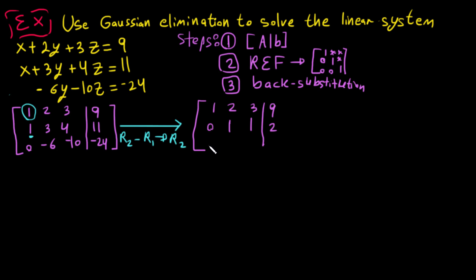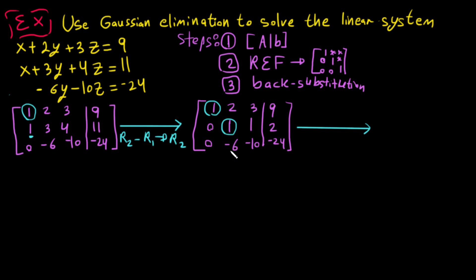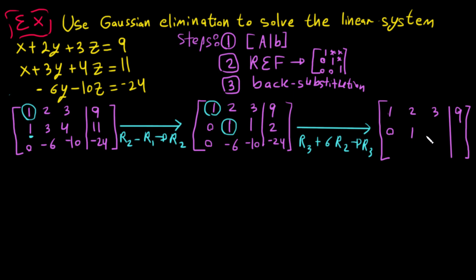Row 3 remains 0 -6 -10 | -24. Now we have a leading 1 in R2. We go below that element and need to make it zero. We multiply R2 by 6 and add to R3: R3 plus 6·R2 into R3.